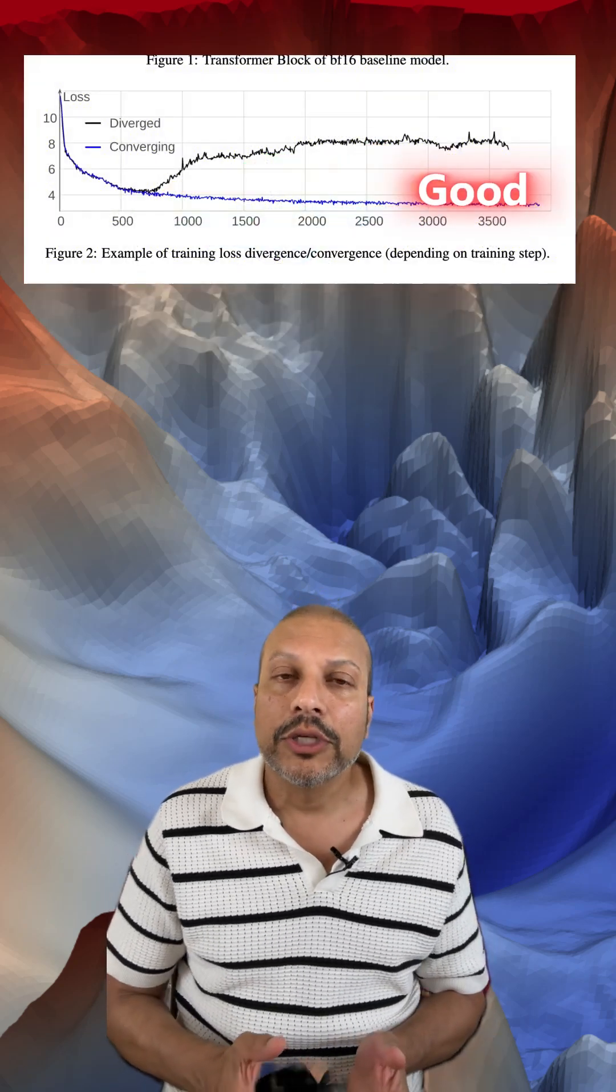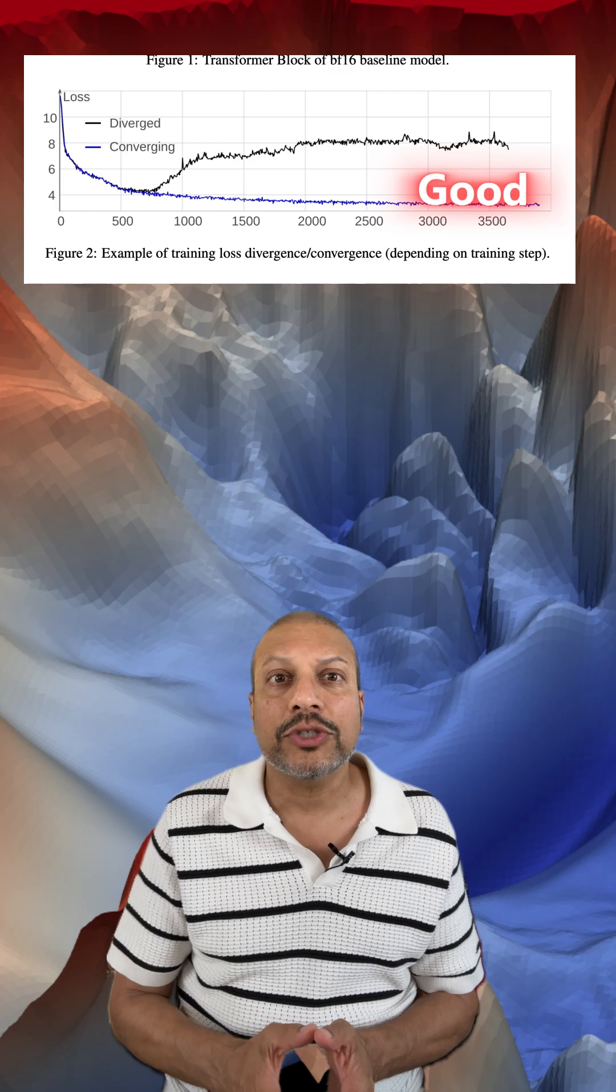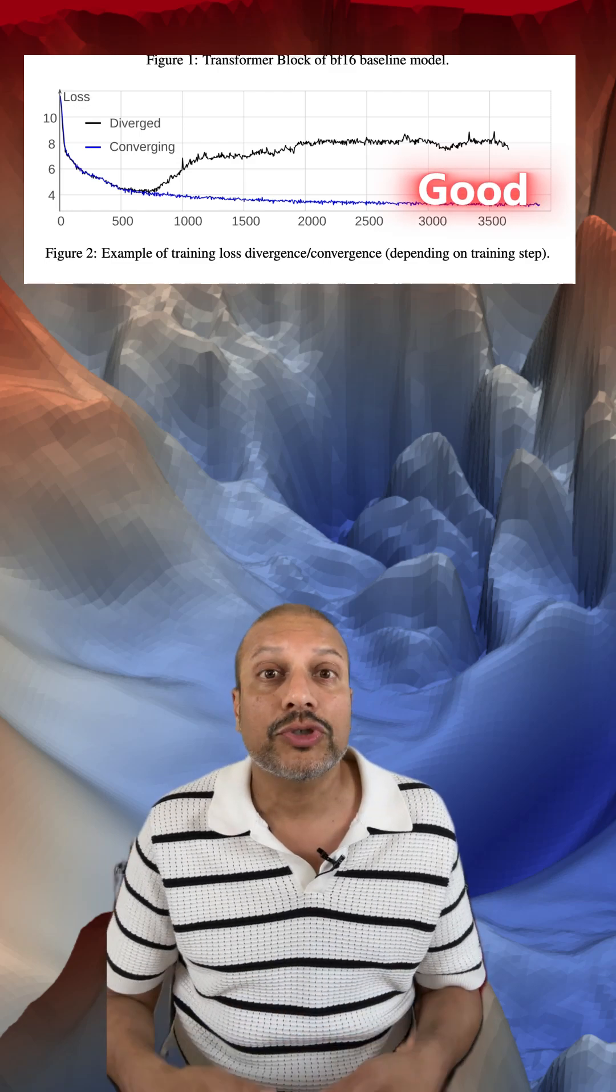Training a neural network is a lot like navigating a landscape. You're trying to reach the lowest point because the lowest point is the place of the least error. So we typically track this with a loss curve, which should steadily fall as training progresses.